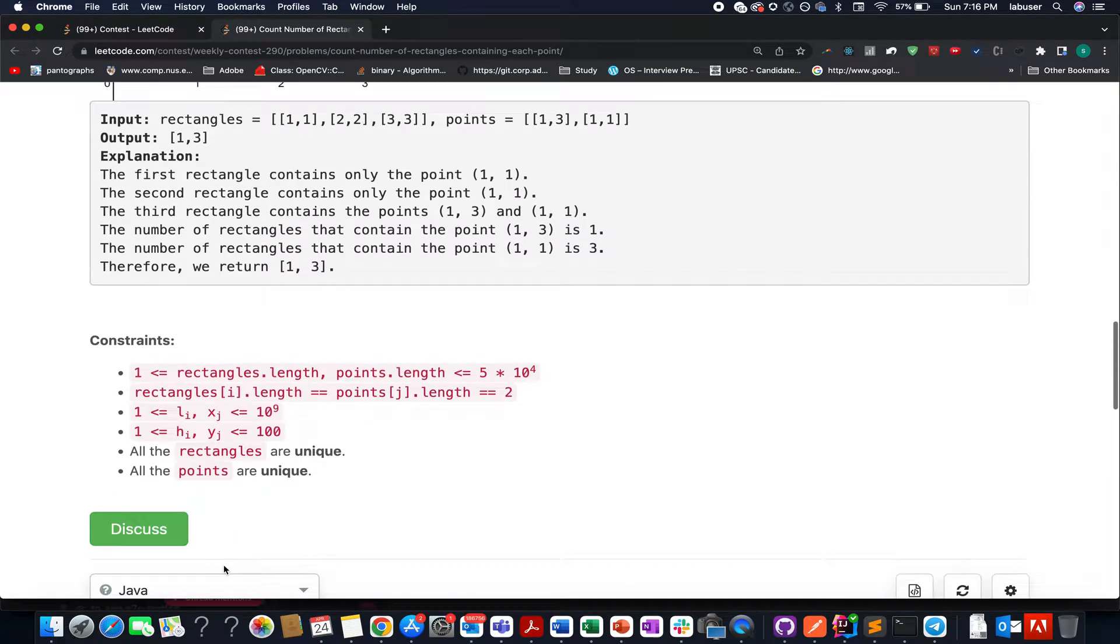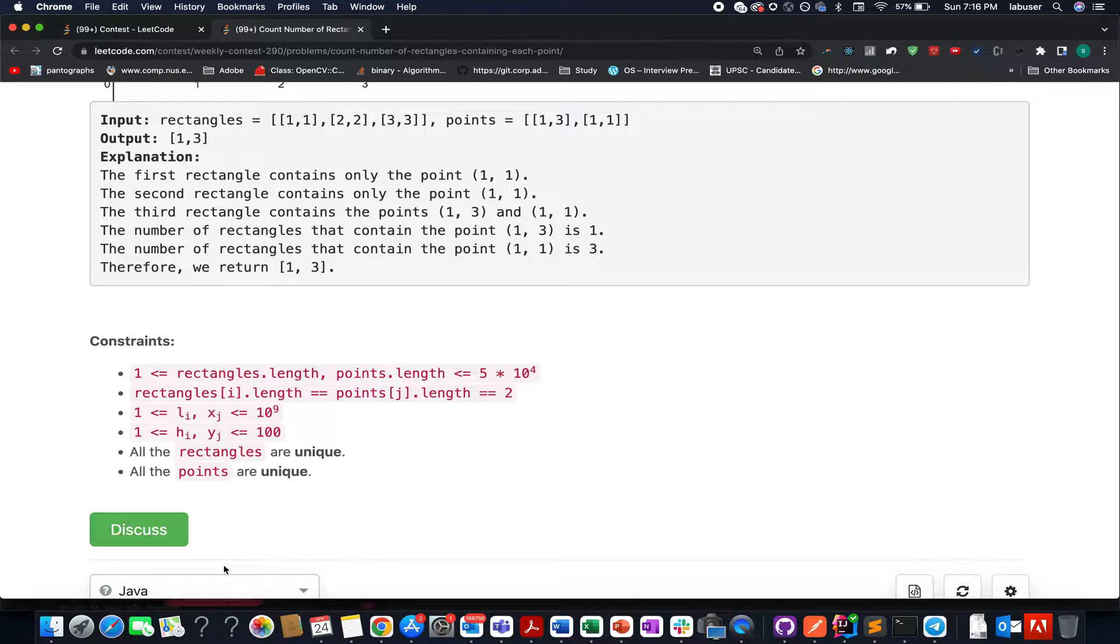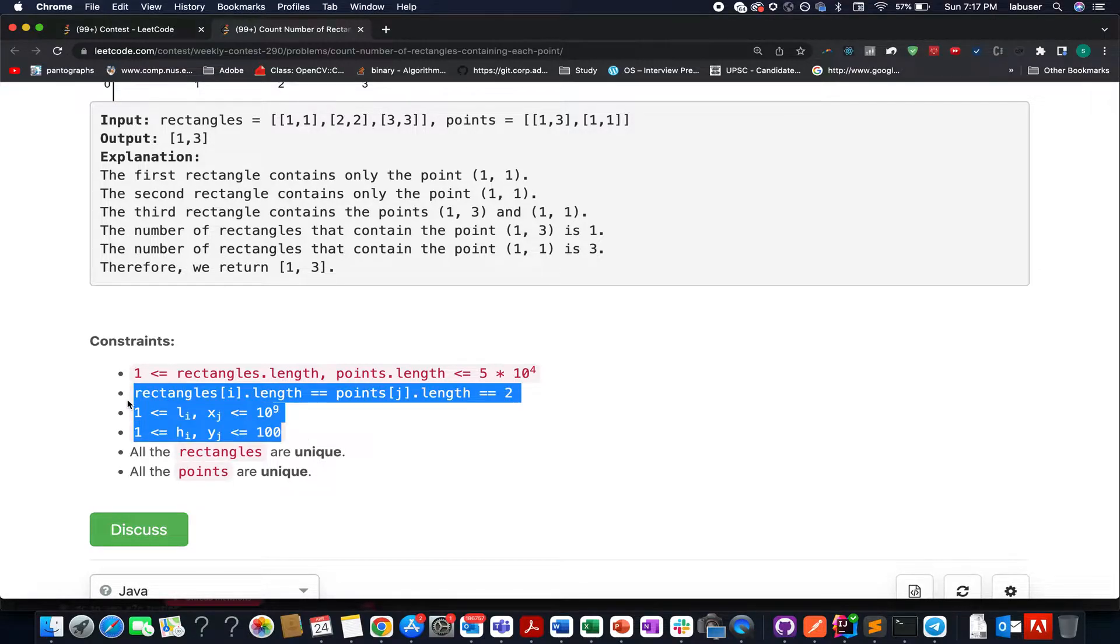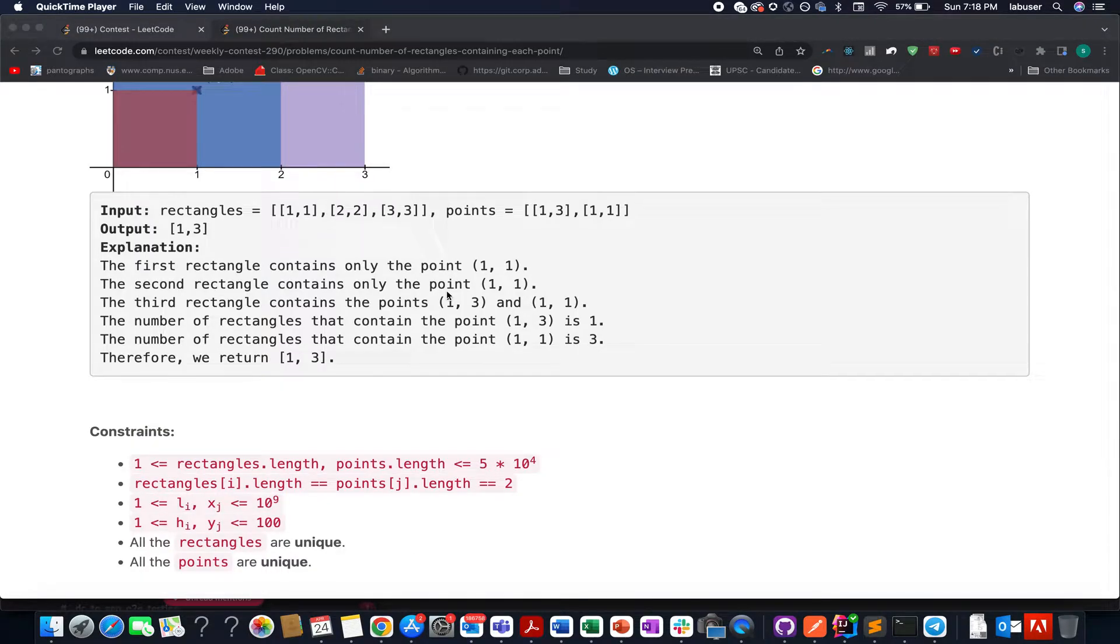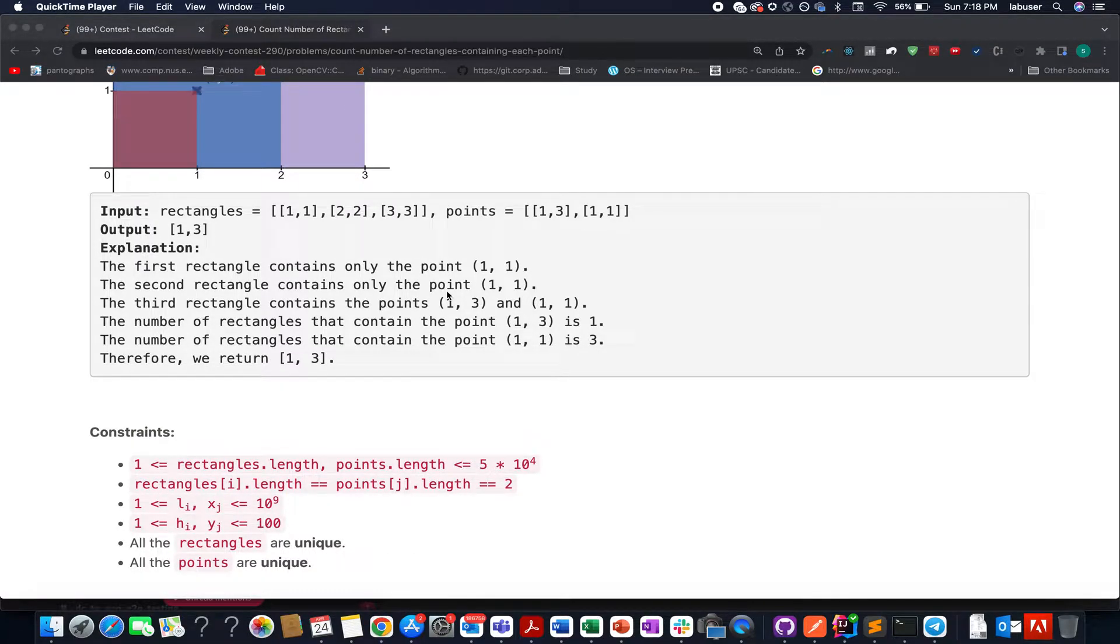There is an important constraint that is specified in the question which people often tend to miss out. What is that constraint? Let's have a look at it. The length values can start from 1 up till 10 raised to power 9 and the height values or the y values will be only in the range of 1 to 100. This is the most important point which people often tend to miss out. If you miss out this point then you will get a TLE. What is that TLE approach? Let's walk through it.